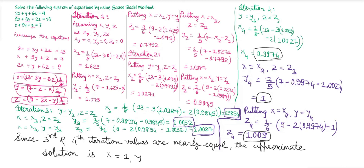Once we have x1, we put x = x1 and z = z0 to find y1. Then we put x = x1 and y = y1 to find z1. The same process continues for other iterations until two successive approximations are nearly equal. The snapshot of this example is available on the website — the link is in the description. Thank you.